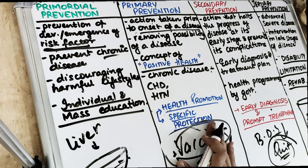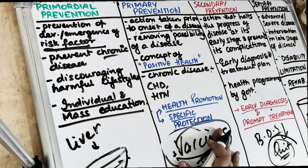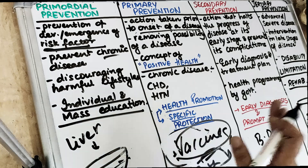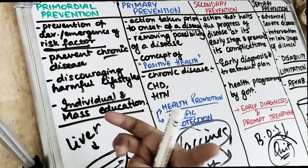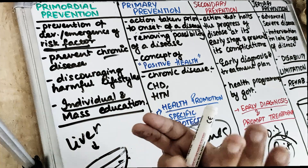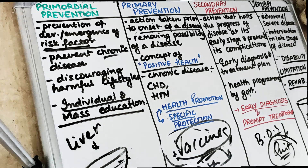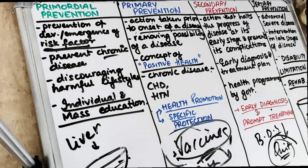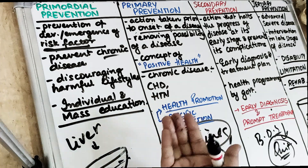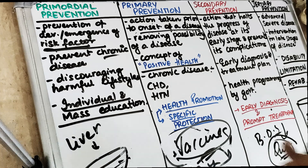In dentistry, when we do pit and fissure sealants, we are protecting the deep fissures present on the occlusal surfaces from developing dental caries. Before the development of dental caries, all the deep areas where food can go and cause caries — we are preventing it and making those areas shallow. That is also an example of primary prevention.